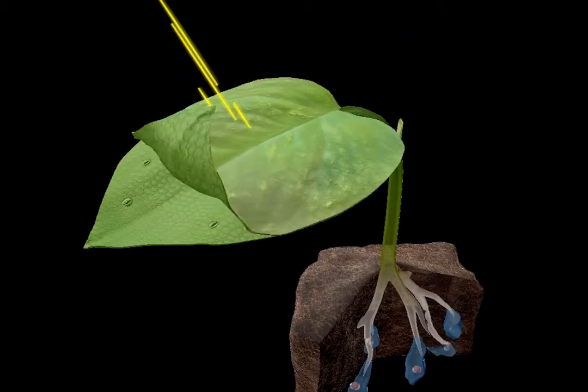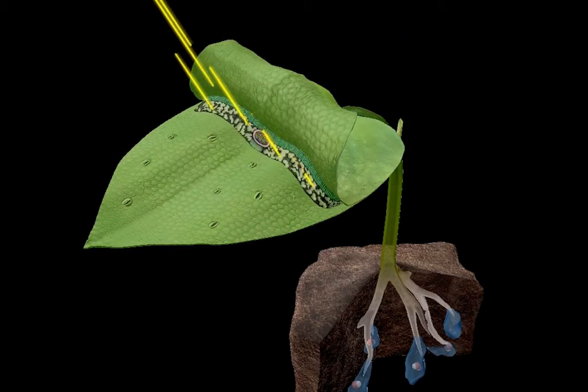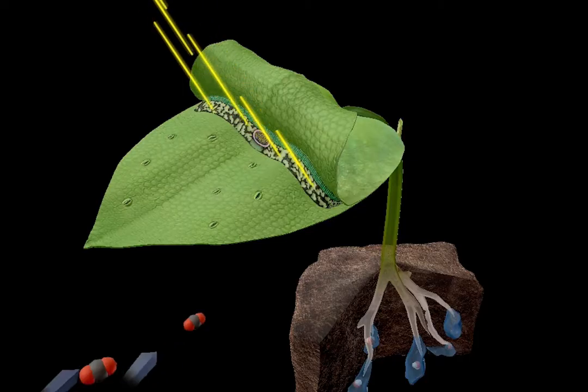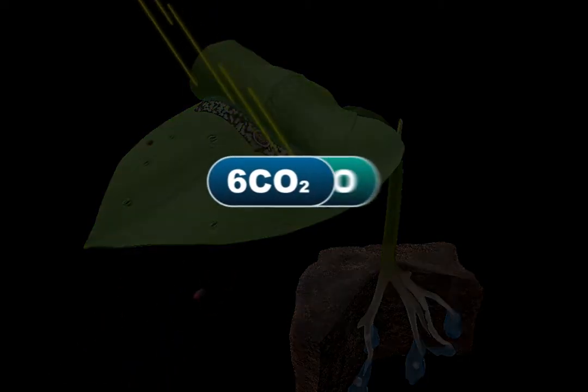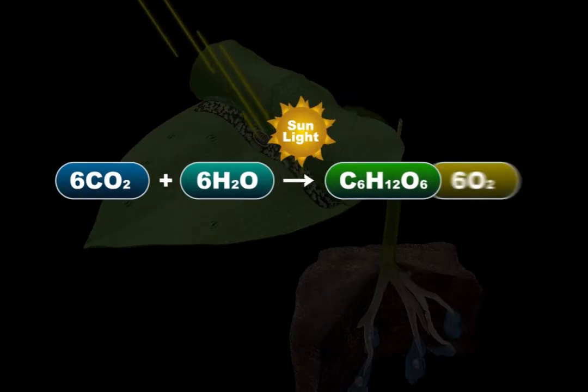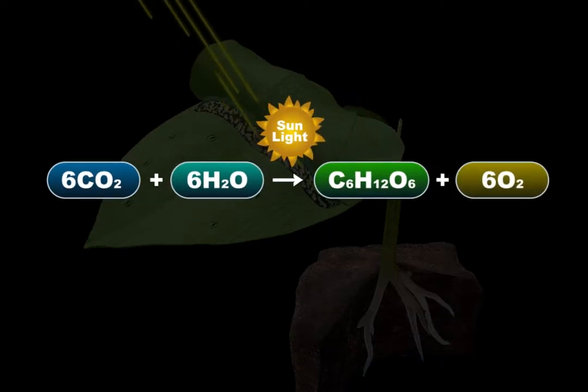Photosynthesis is the process plants use to create sugars. It's represented by this chemical equation, which shows the reactants, or compounds that undergo a change during a reaction, and the products. Let's go over each component to see how the process works.